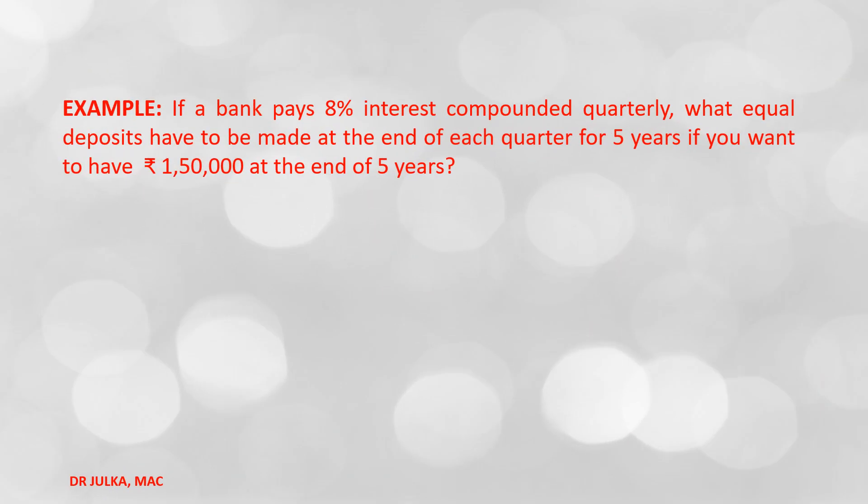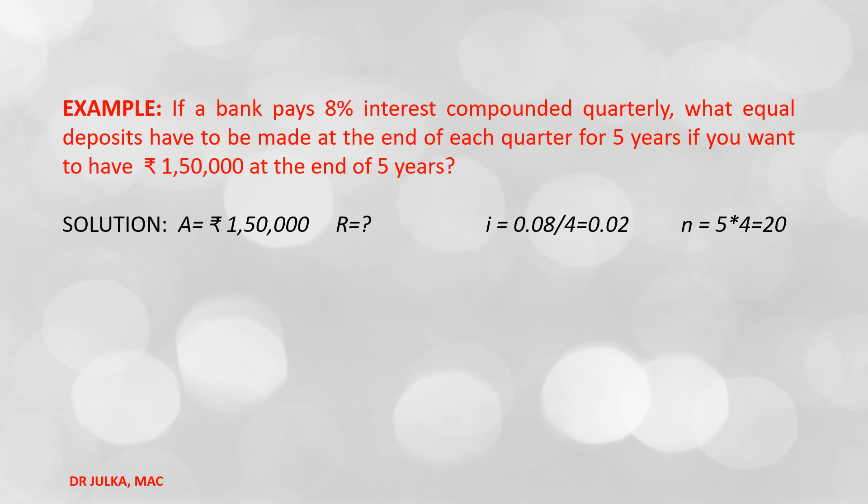Next example: if a bank pays 8% interest compounded quarterly, what equal deposits have to be made at the end of each quarter for 5 years if you want to have Rs. 1,50,000 at the end of 5 years? In this example, future value A = Rs. 1,50,000, interest rate i = 0.08 / 4 = 0.02, and n = 5 × 4 = 20. We want to calculate the annuity amount R.